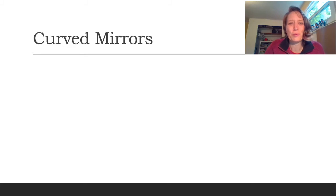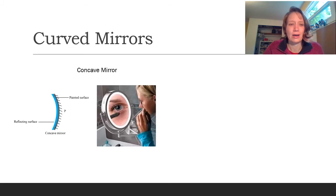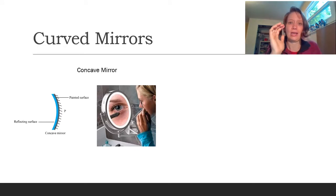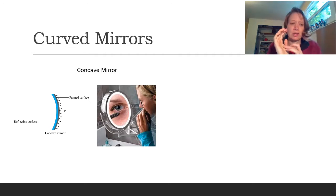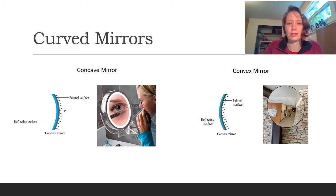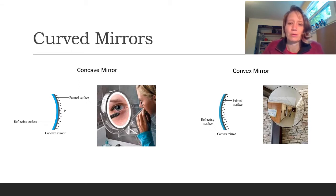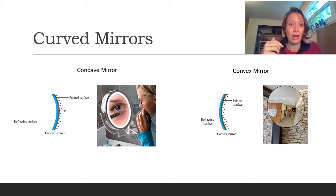I'm going to start with just some vocabulary associated with curved mirrors. There are two types: the first is a concave mirror, which looks like a cave — circular or parabolic in shape with the reflecting surface on the inside. The other kind is a convex mirror, same shape but the reflecting surface is on the outside. You've probably seen both — concave mirrors like magnifying mirrors, and convex mirrors like the ones on your car or rear-view mirrors.